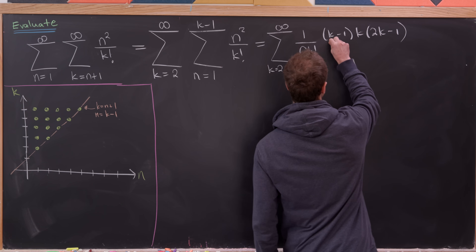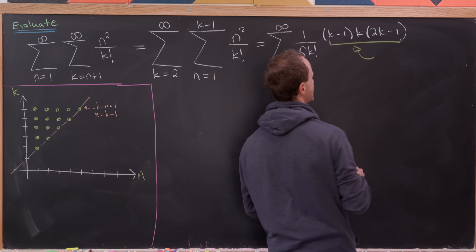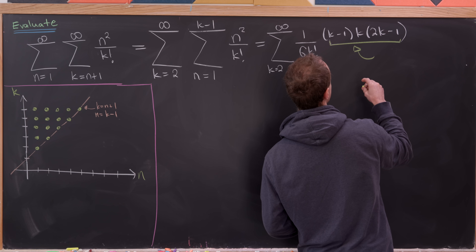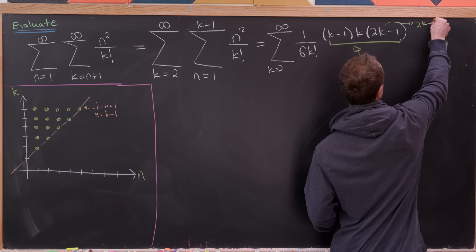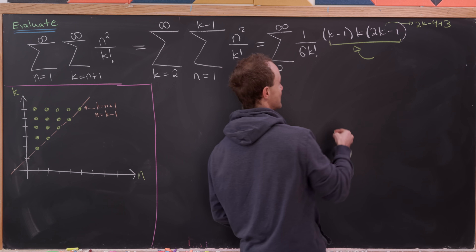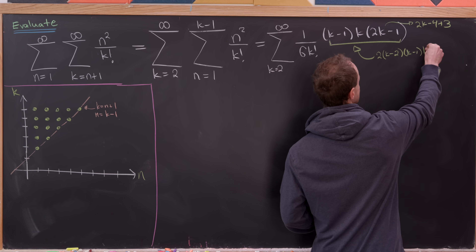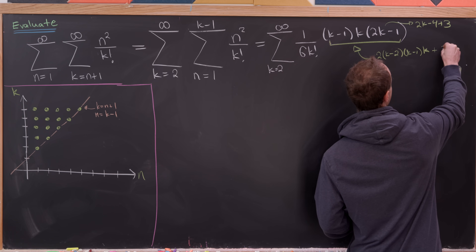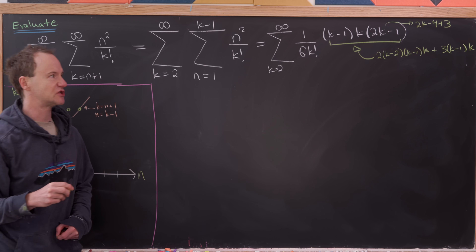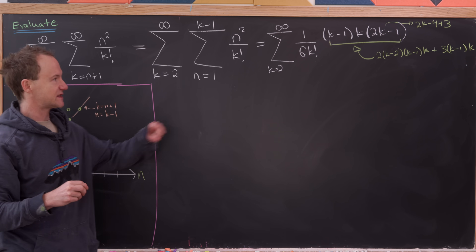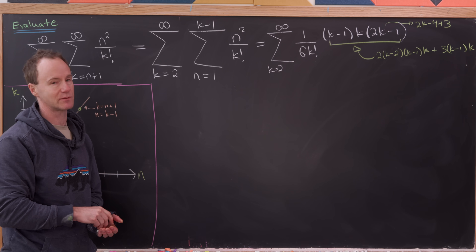Now we rewrite k minus 1 times k times 2k minus 1 in a tricky way. Let's think of 2k minus 1 as 2 times k minus 4 plus 3. That allows us to write the expression as 2 times k minus 2 times k minus 1 times k, plus 3 times k minus 1 times k. We do this because we want the numerator to interact nicely with the k factorial in the denominator by expressing things as descending products.